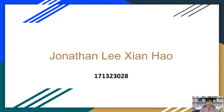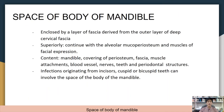The space of the body of the mandible is enclosed by a layer of fascia derived from the outer layer of deep cervical fascia, which attaches to the inferior border of the mandible and encloses the body of the mandible. It contains the mandible, covering of periosteum, fascia, muscle attachments, blood vessels, nerves, teeth, and periodontal structures. Infections originating from incisor, cuspid, or bicuspid teeth can involve the space of the body of the mandible.